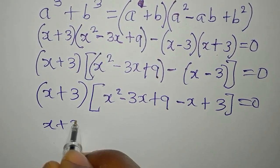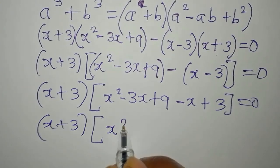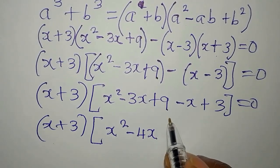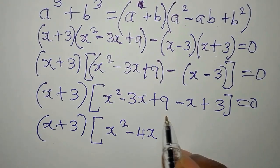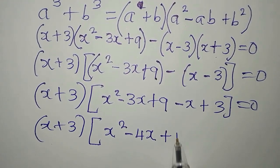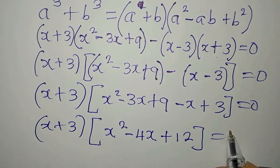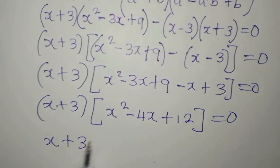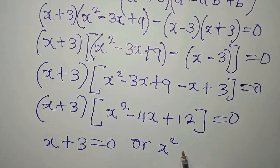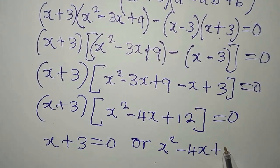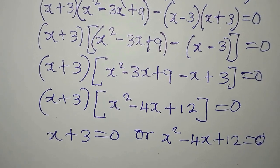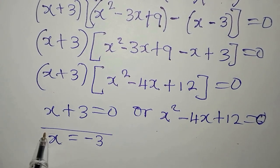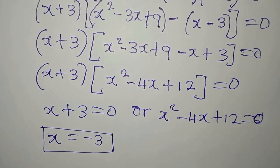x plus 3 remains the factor. x squared minus 3x minus x gives us minus 4x, then plus 9 plus 3 gives us plus 12. So we can conclude it is either x plus 3 equals 0, or x squared minus 4x plus 12 equals 0. If x plus 3 equals 0, then x equals negative 3 — that is one of the real solutions to the equation.